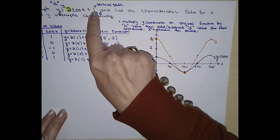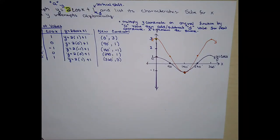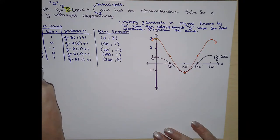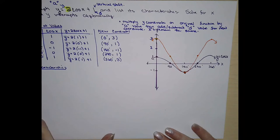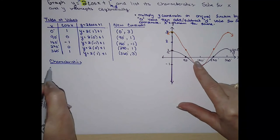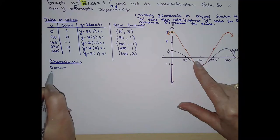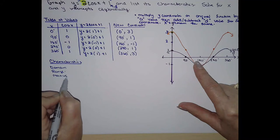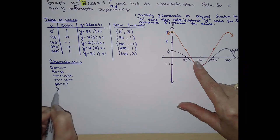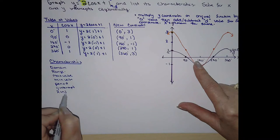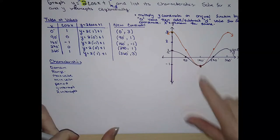I'm going to call that plus number at the end a D-value. We're only changing the y-coordinates; the x's are never going to change. That's how you graph them. So let's talk about their characteristics, because a few things have changed. Your characteristics: you'll need to know your domain, range, max value, min value, the period, your y-intercept, and your x-intercepts.